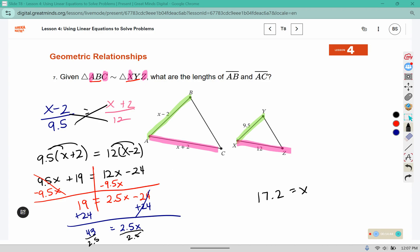But we need to find the side lengths, so we're going to plug those back in. 17.2 plus 2 is 19.2. And 17.2 minus 2 would be 15.2. AB is 15.2 and AC is 19.2. We don't have any units here, so we're just going to leave them as generic units.